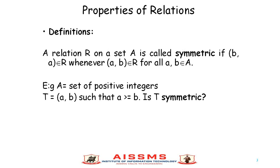The second property is the symmetric property. A relation R on set A is called symmetric if (B, A) belongs to R whenever (A, B) belongs to R, for all A, B belonging to A.